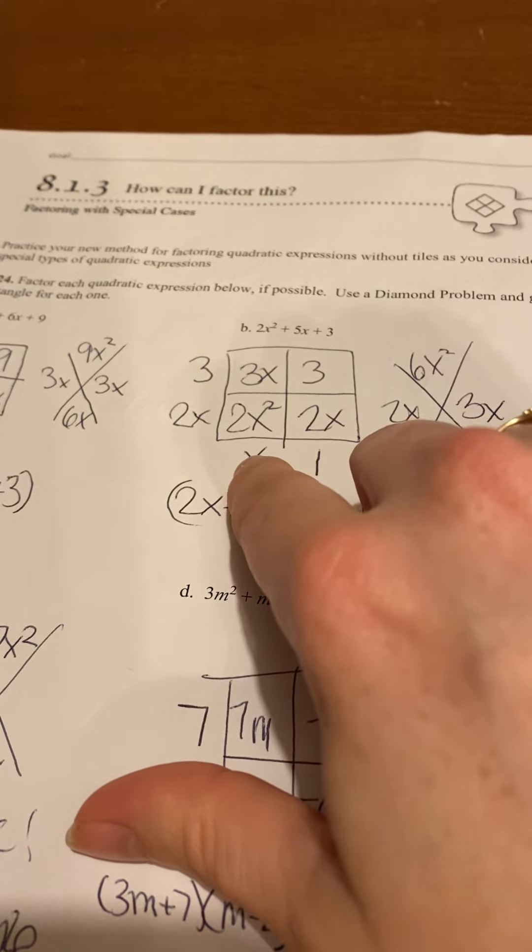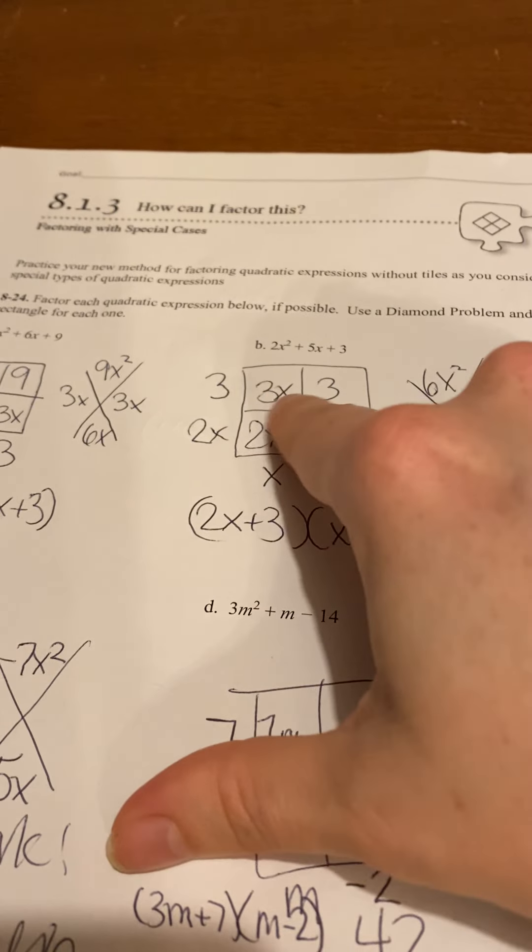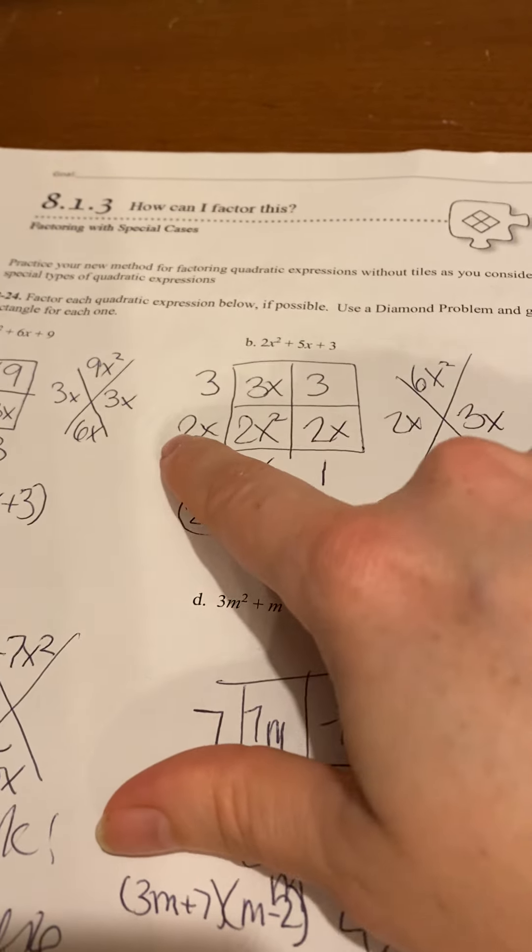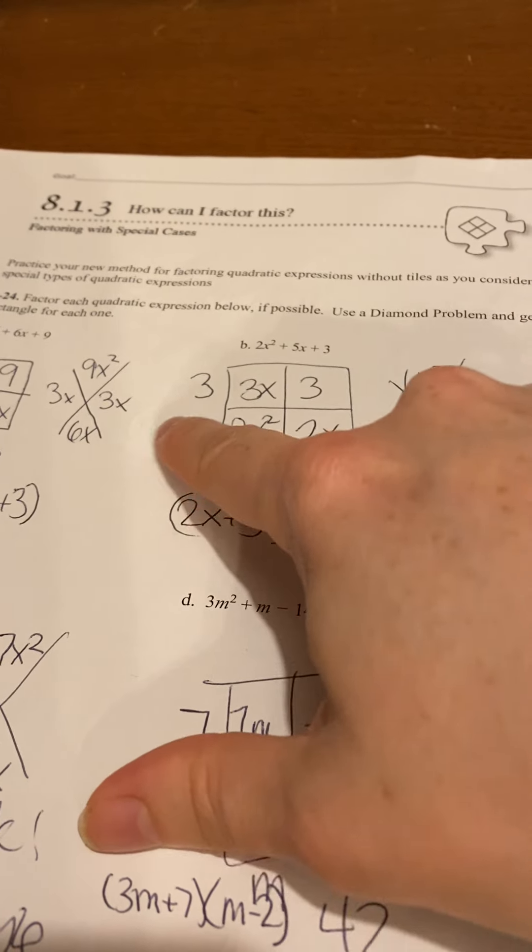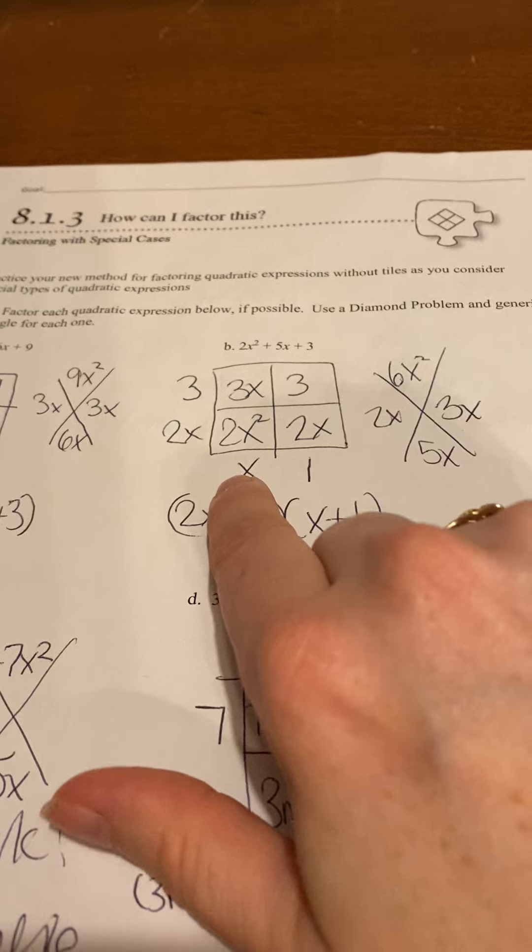Because if you put it here, there's not 2 times any whole number that would get you 3. So you would know that the 2x is going to have to be on this side, so it can match up with that one, which puts the x here.